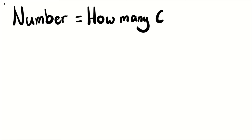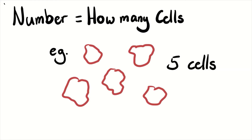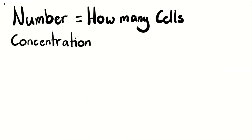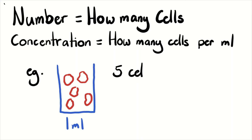The first important thing is that you need to know definitions. A number of cells is how many cells there are — for example, five cells is a number. In contrast, a concentration is the number of cells per a volume or per an area. For example, five cells per mil is a concentration. It's really important that you understand the distinction between those two things.